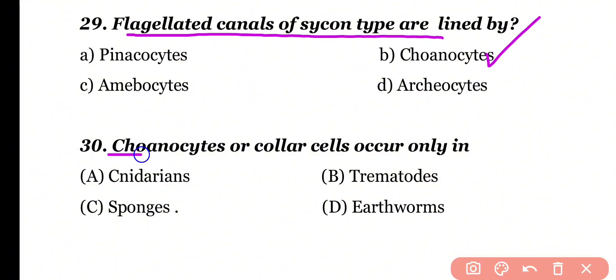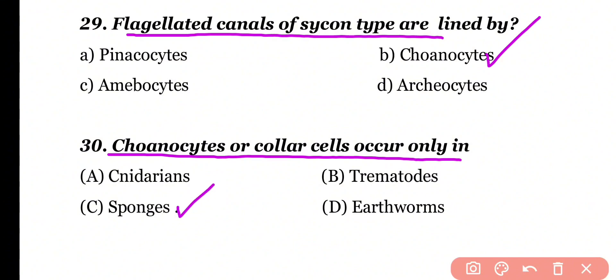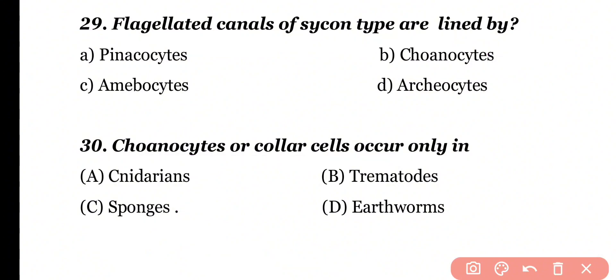Question number 30. Pinacocytes or flat cells occur only in: cnidarians, trematodes, sponges, or thwom. Correct answer is option C. Pinacocytes or flat cells are the characteristic features of sponges only.